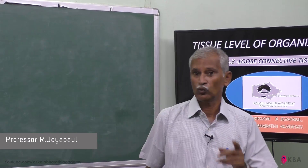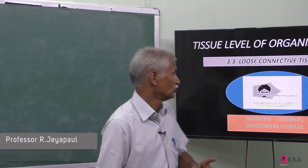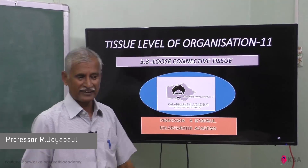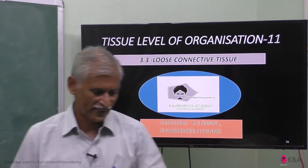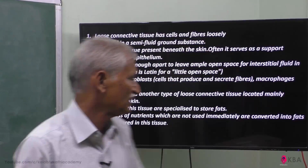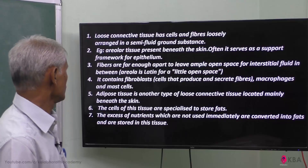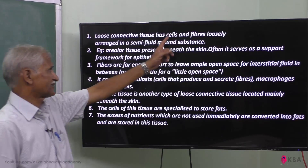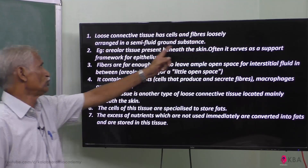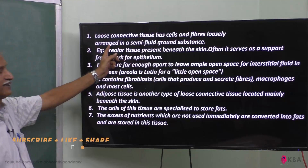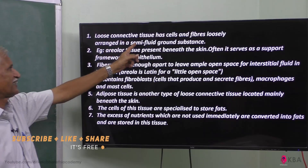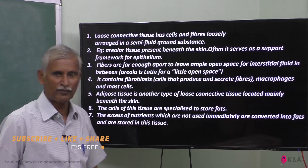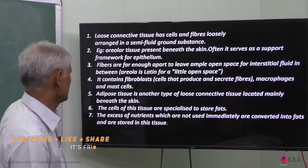Connective tissue is a type of loose connective tissue. What is loose connective tissue? Loose connective tissue has cells and fibers loosely arranged in a semi-fluid ground substance — that is, the matrix.